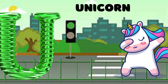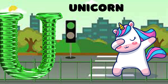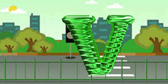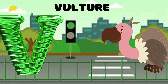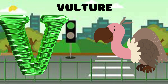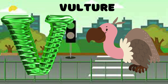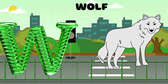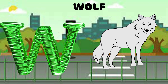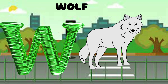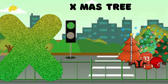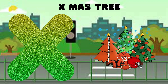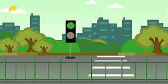U is for unicorn, u-u-unicorn. V is for vulture, v-v-vulture. W is for wolf, w-w-wolf. X is for xmas tree, x-x-xmas tree.